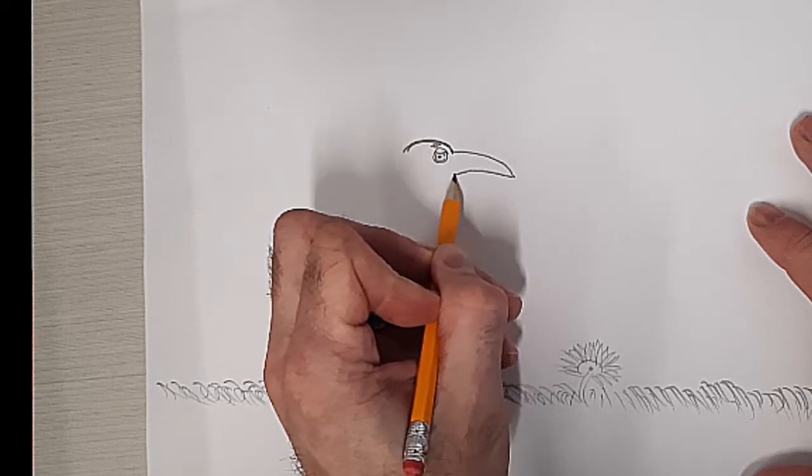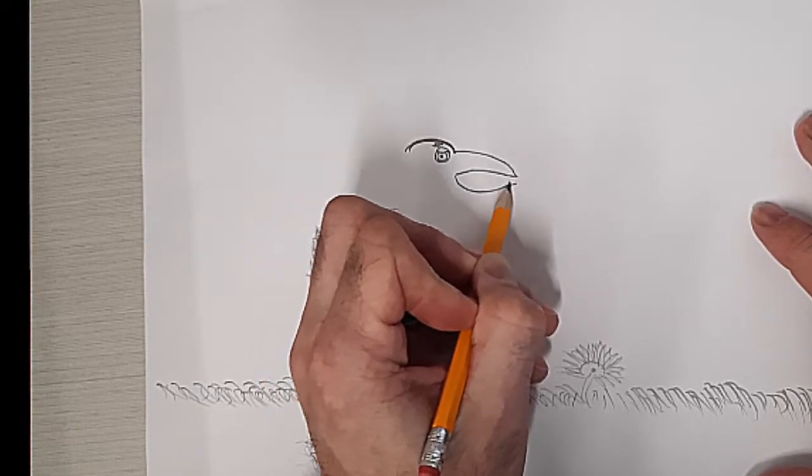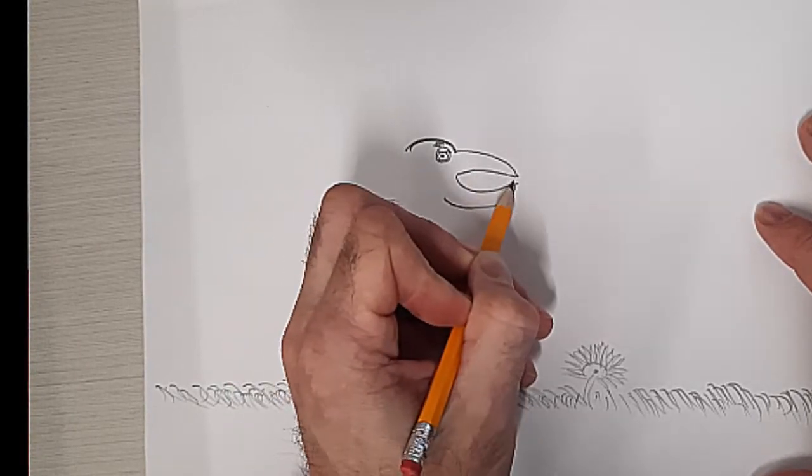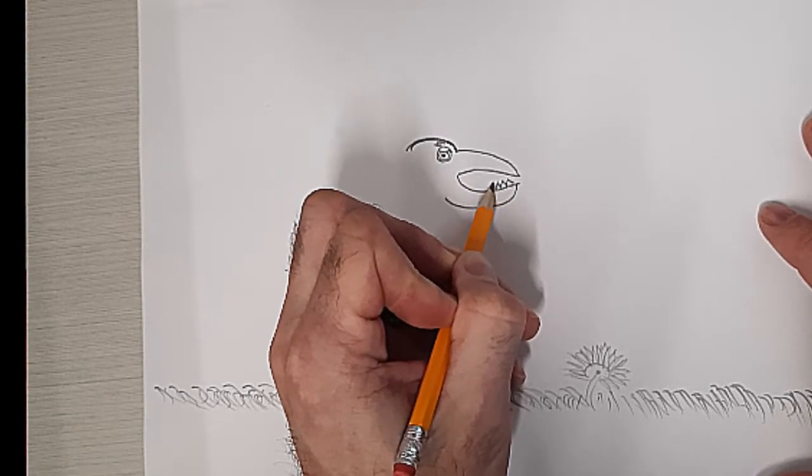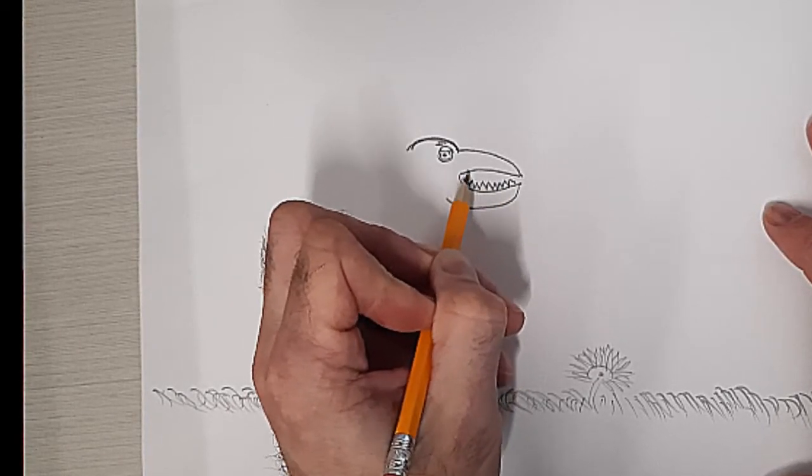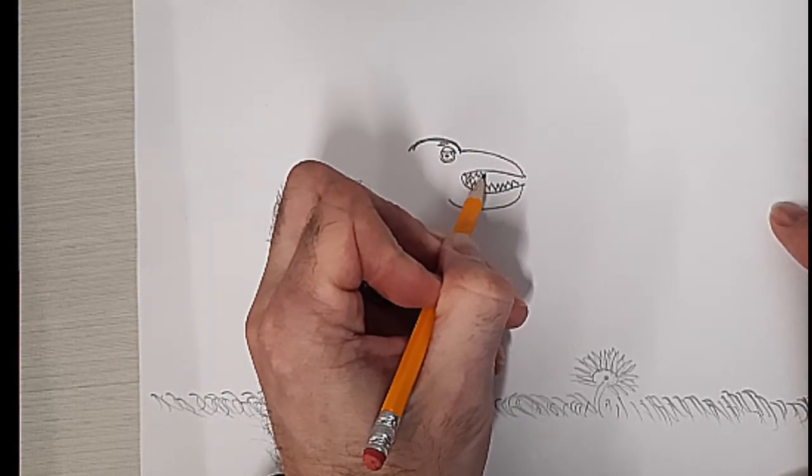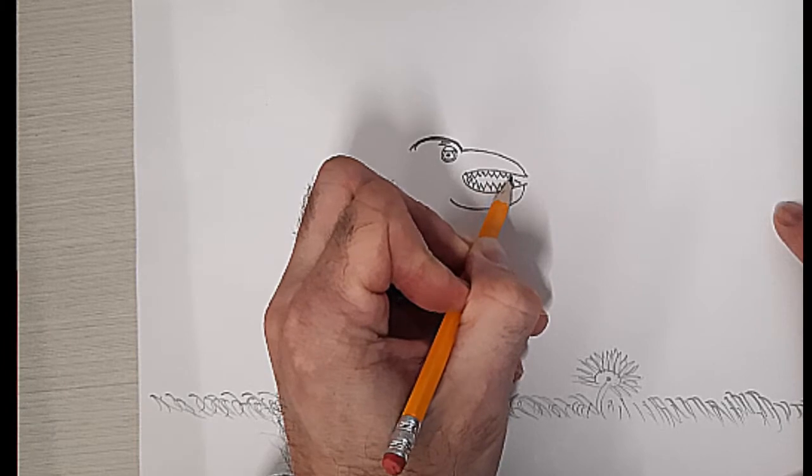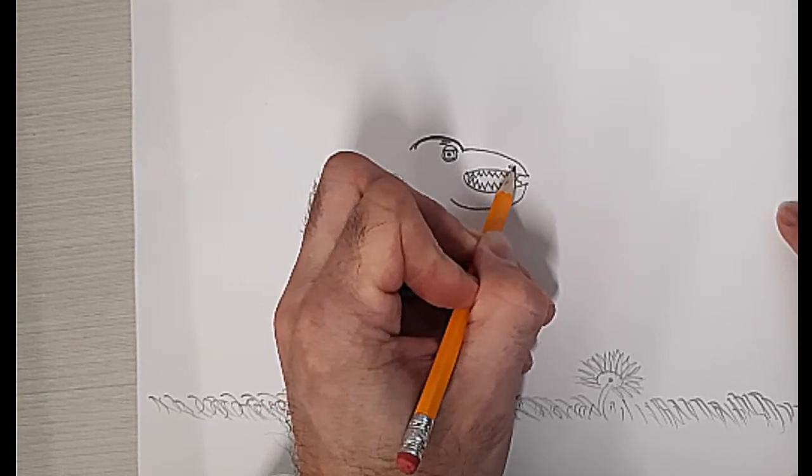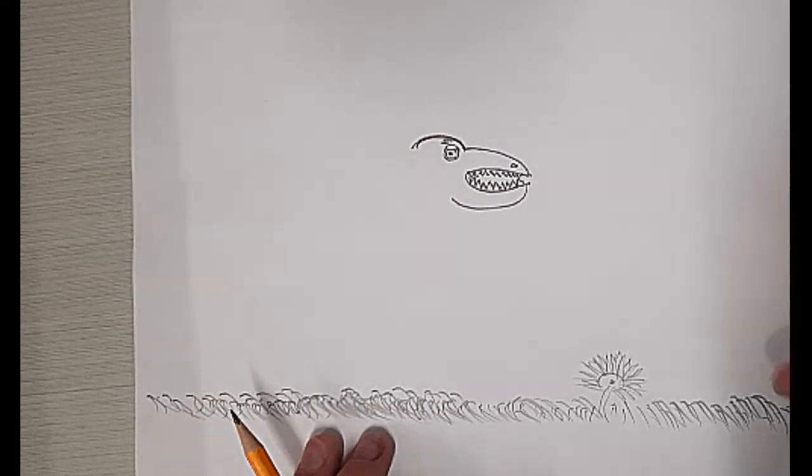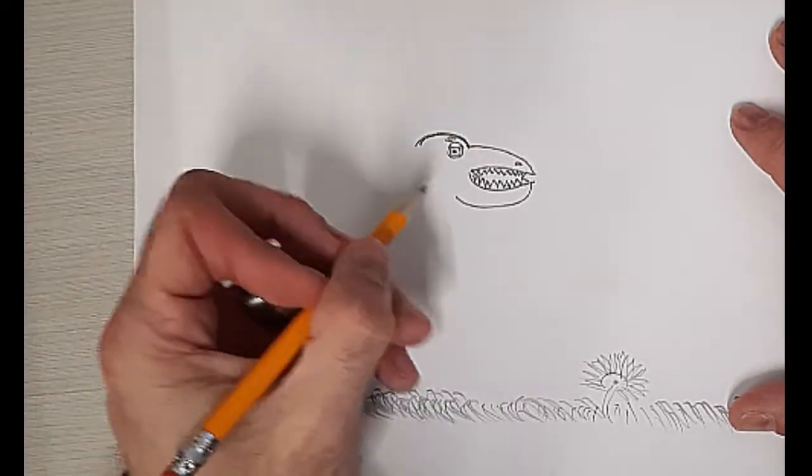And dinosaurs are going to have these big chomping teeth. And they're going to have two nostrils. We can't see the other one, correct? Correct. Because it's on the other side.